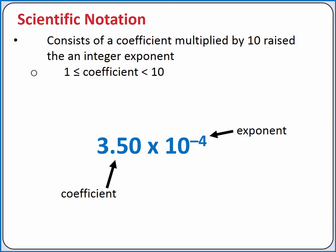Scientific notation consists of a coefficient which is multiplied times 10 raised to an integer exponent. In standard scientific notation, the coefficient is 1 or greater and less than 10.